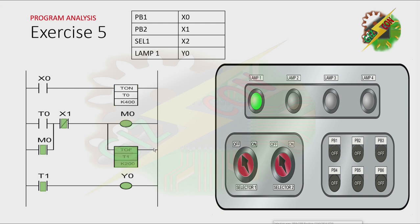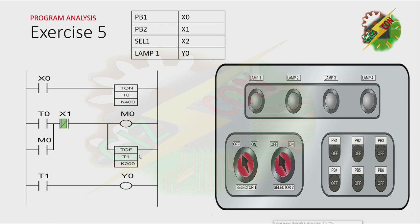Now let's release PB1. As you can see, even if we release PB1, the lamp is still on because there is a latching here. The only way to turn it off is by energizing X1. Now let's press PB2. Because PB2 is pressed, X1 here will open, and that will cause M0 to be deactivated. Because there is no signal here anymore, the timer will start counting. After 2 seconds, the timer is deactivated, and that will cause this contact to go back to its initial state. Because of that, Y0 will be de-energized and the lamp will turn off.